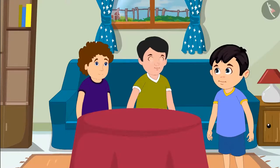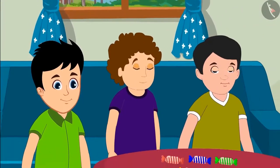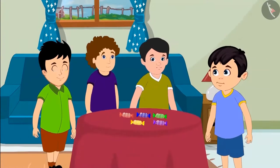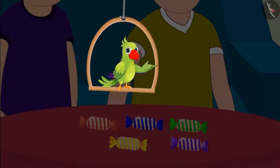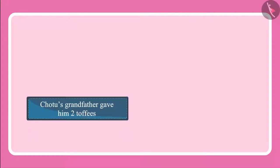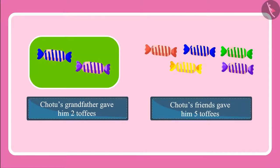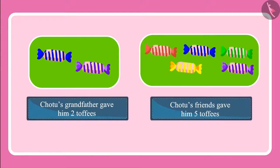After some time, some of Chotu's friends also arrived. Chotu's friends also brought some toffees for Chotu. They gave Chotu five toffees. So can you tell me how many toffees did Chotu get in total? Come let's see. Chotu's grandfather gave him two toffees and his friends gave him five toffees. Two toffees and then five more toffees.